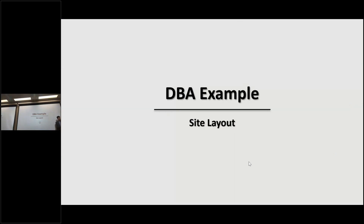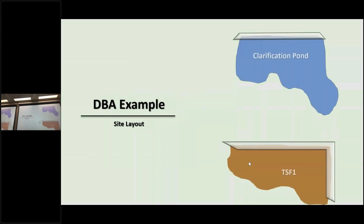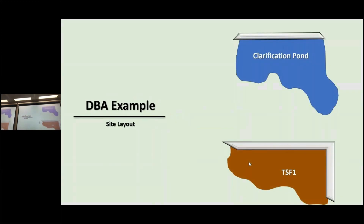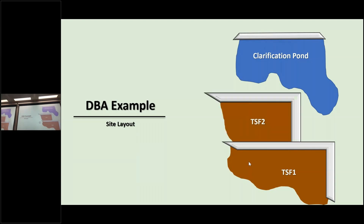I'm going to take you through an example of a dam break assessment that I did. I will keep the location of the mine confidential, but here's a basic layout of our site. There's a TSF — we'll call that TSF1 — and immediately downstream is a clarification pond. The plan of the study was to build a second TSF, TSF2, right against this initial TSF. The issue is it could lead to a triple cascade failure: TSF1 collapses into TSF2, TSF2 collapses into the clarification pond, and the clarification pond collapses to the environment. It could be disastrous.